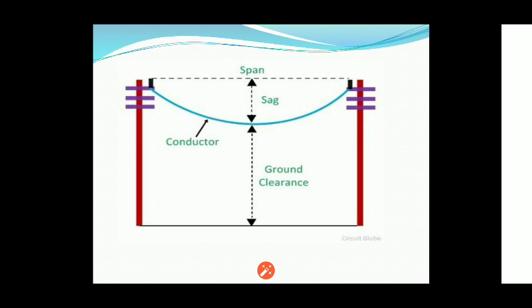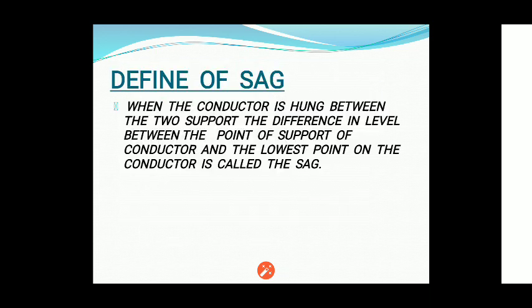Due to high temperature and wind pressure, the length of the conductor will increase. This is known as sag. The definition of sag: when the conductor is hung between two supports, the difference in levels between the point of support of the conductor and the lowest point on the conductor is called sag. Sag depends on the length of the conductor, as well as on weight, temperature, and wind pressure.